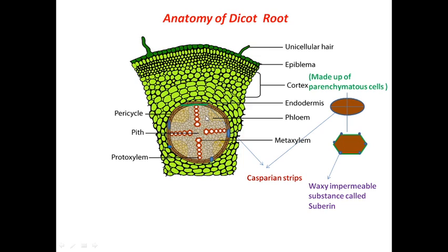Next we have the pericycle. The pericycle has two jobs. First, it forms the cambium cells, which later give rise to secondary xylem and secondary phloem. The second job of the pericycle is that lateral roots originate from it — that is why we say lateral roots are endogenous in origin, because they originate from the interior of the root. The pericycle layers are also made up of parenchymatous cells.